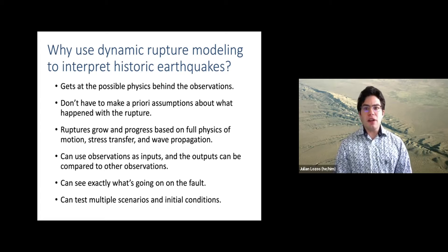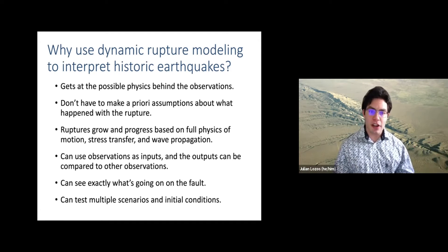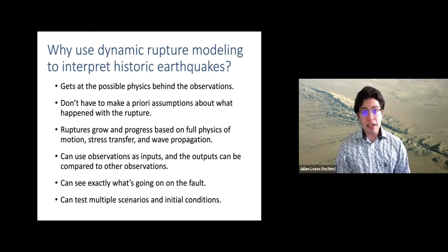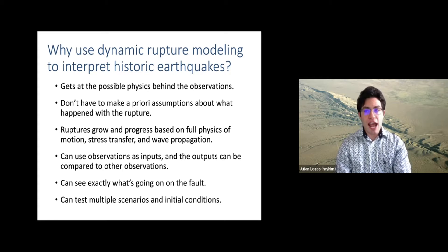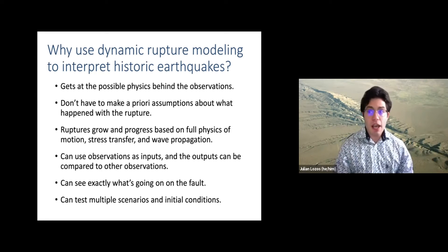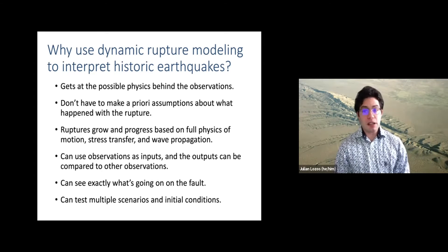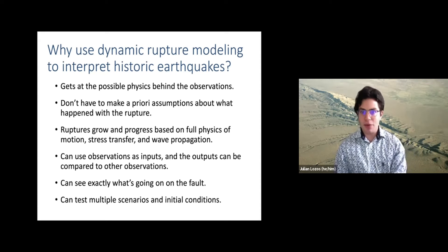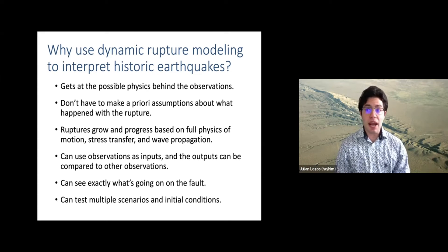A nice thing about dynamic modeling as opposed to static or kinematic is that I don't have to make an a priori assumption of what happened. I don't have to assume it was this part of this fault. I can basically put in a bunch of different possible faults, start the earthquake under various conditions, and see what happens — rather than asking what needs to have happened to cause this presumed rupture, I can ask where would the rupture go under these conditions, and then does that match what we know happened in terms of damage and felt reports?